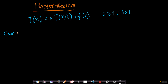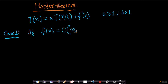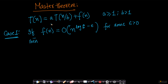There are three cases of master theorem. Case 1 says: if f(n) is big-O of n^(log_b(a) − ε) for some ε > 0, then T(n) = Θ(n^(log_b(a))). Let me explain this with an example.